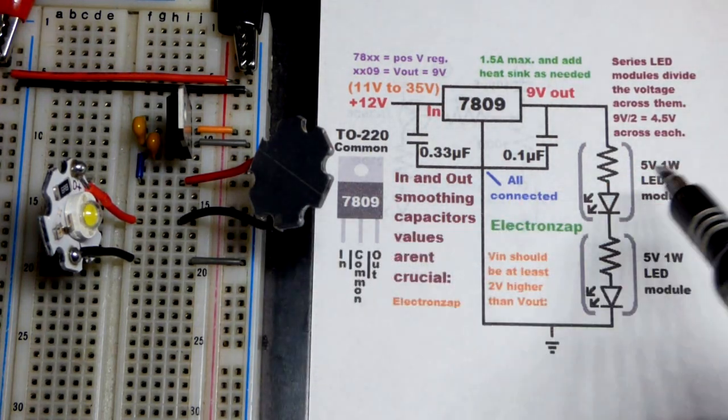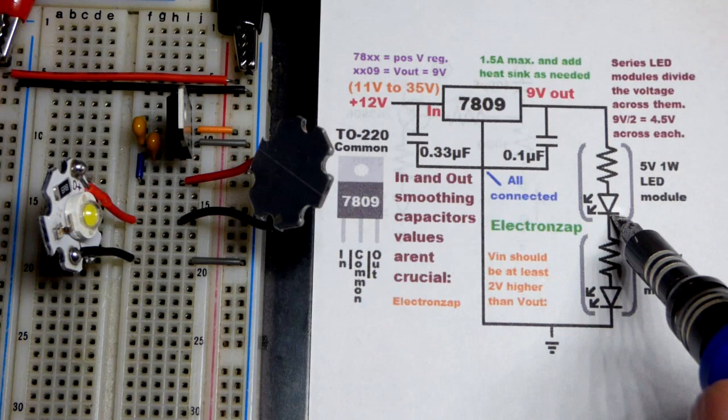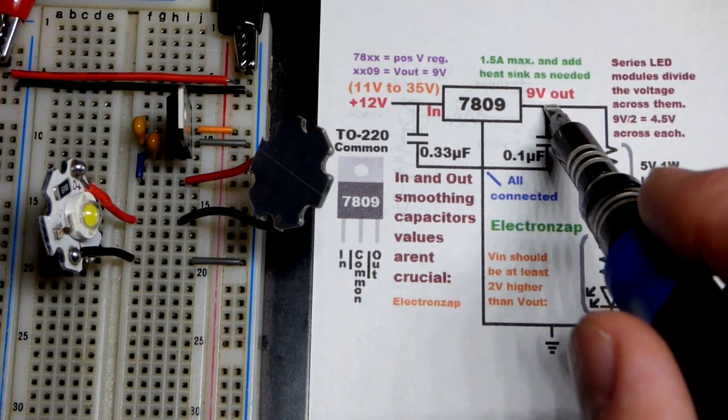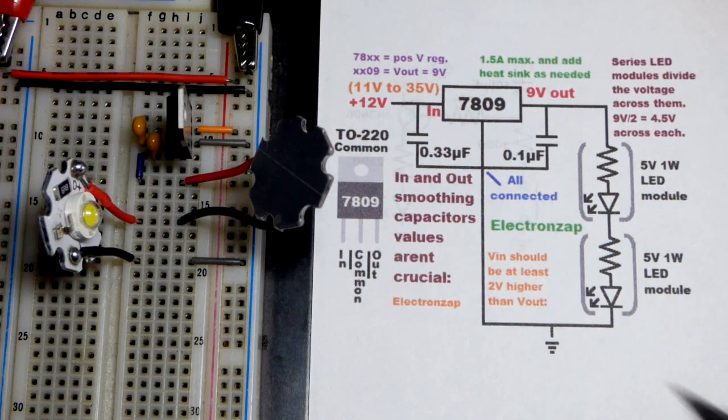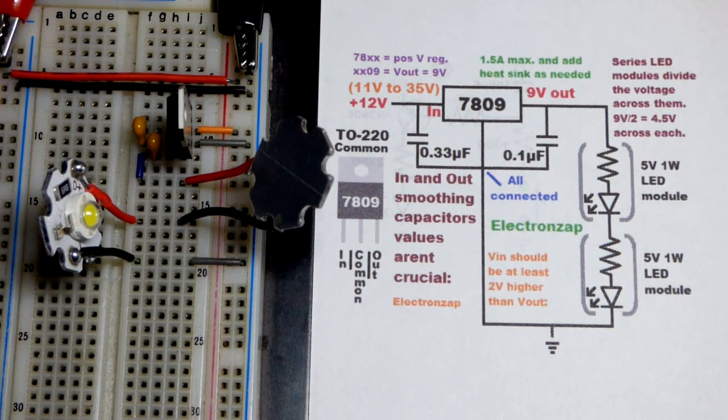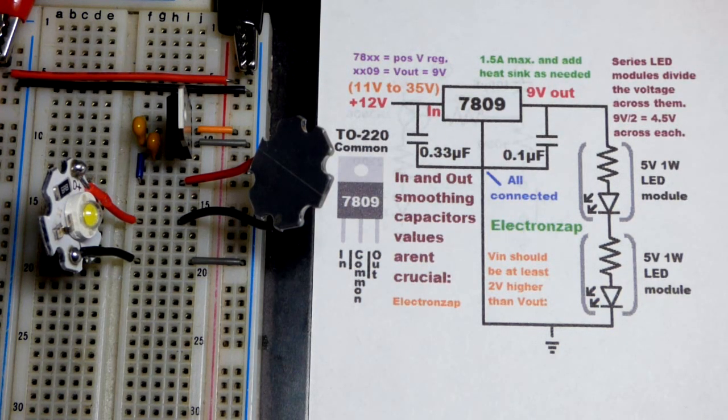They're equal components so each one of them will get half of the supply voltage. So out of 9 volts, 4.5 volts will be across each one of the LED modules, a bit below the 5 volt max.